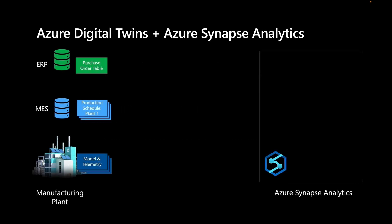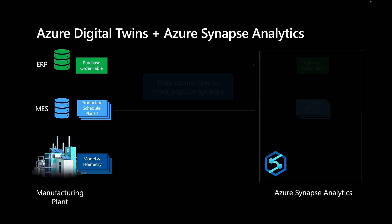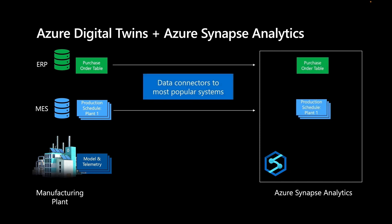Alice can use Azure Digital Twins and Azure Synapse Analytics to ingest the needed data into a common workspace, and to then combine and analyze the data to investigate the issue. Azure Synapse Analytics provides connectors that make it easy to ingest data from a wide variety of sources, including the most popular ERP and CRM packages.